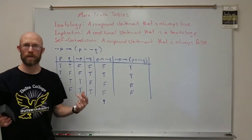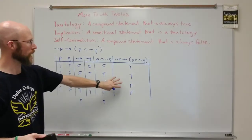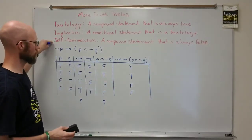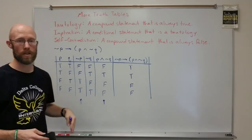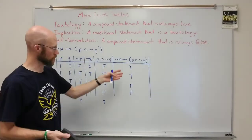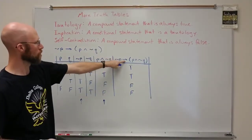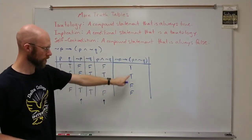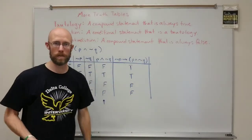Now let's try another one. This one is obviously neither a tautology nor a self-contradiction. It's also not an implication because it is a conditional, but it's not a tautology — we'd have to have all trues for it to be a tautology.